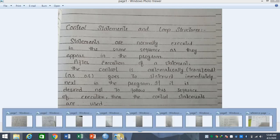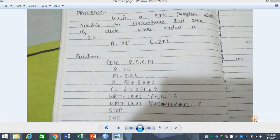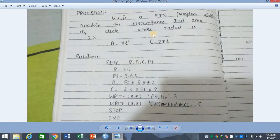If we take an example, we have a Fortran program which calculates the circumference and area of a circle. I have also done this program — maybe it was assigned to you. You can see that the type is defined, then R is defined, then PI is defined, then circumference, and the sequence follows in order.